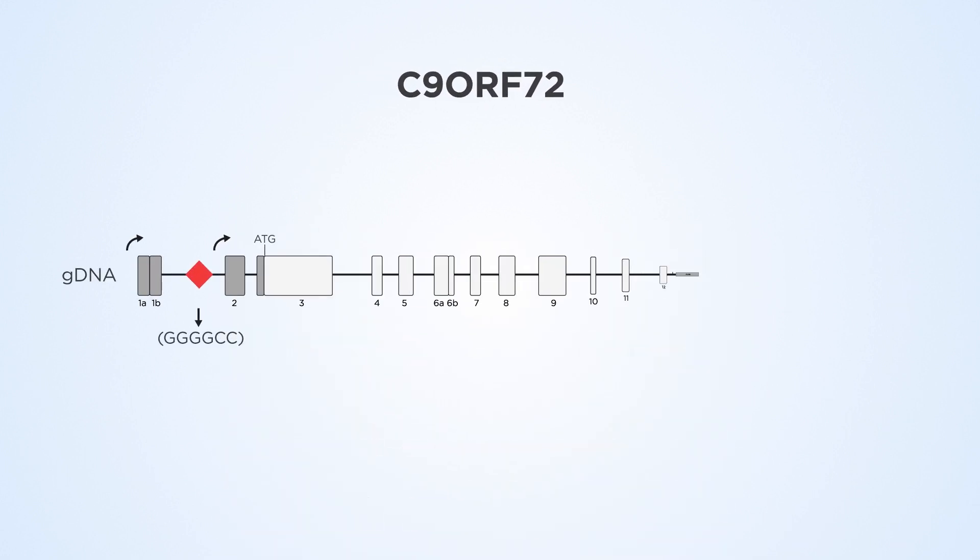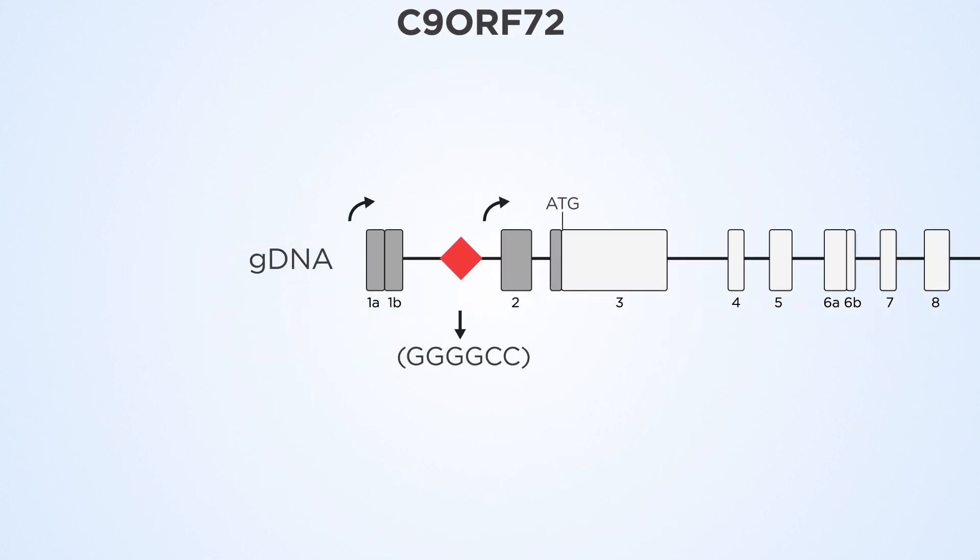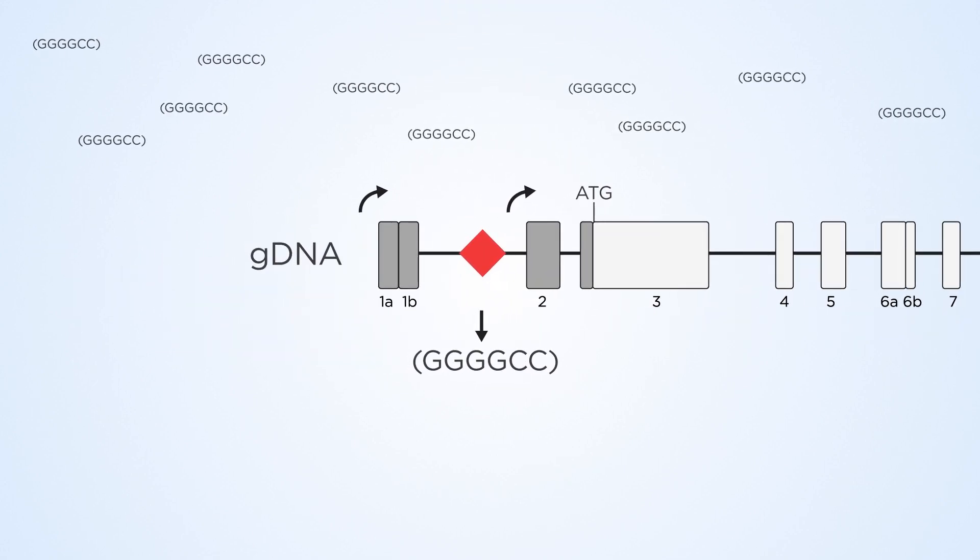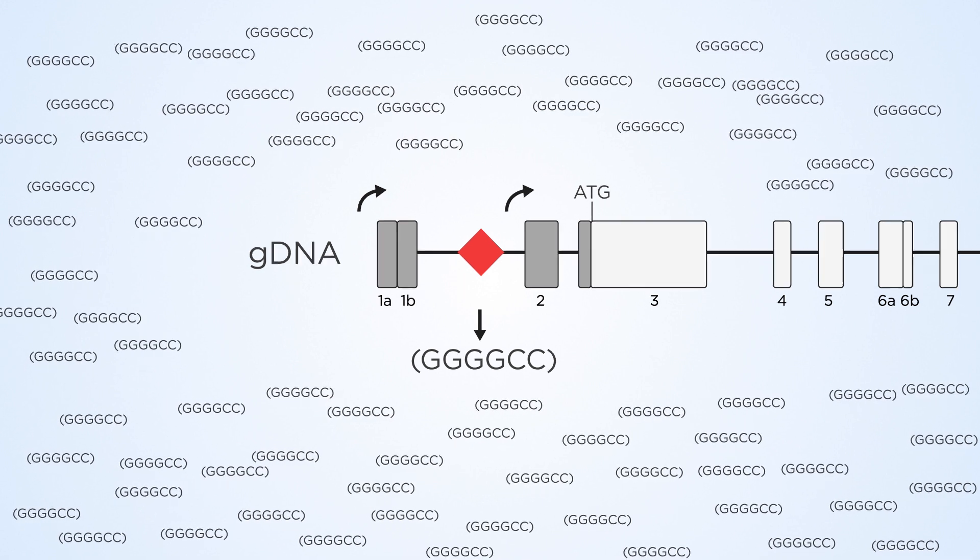The gene C9ORF72 contains a six-letter string of nucleotides, GGGGCC. Healthy individuals have 3 to 23 repeats of this string, but patients with ALS have hundreds to thousands.